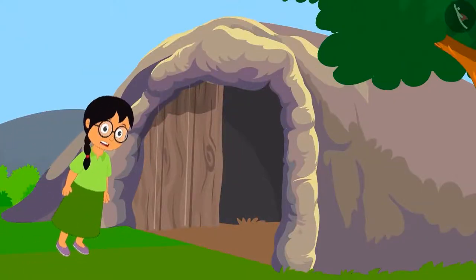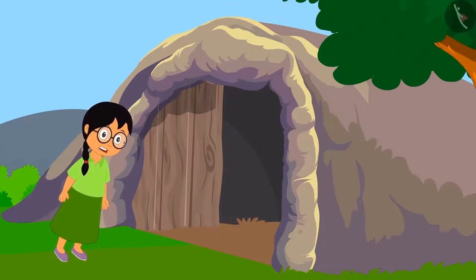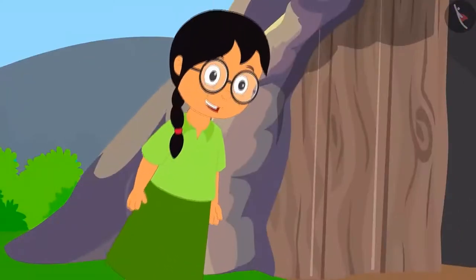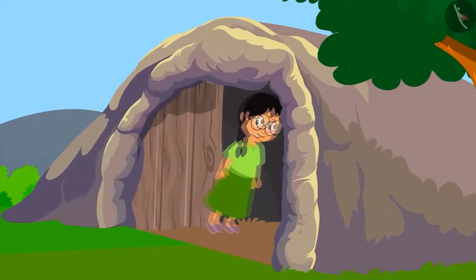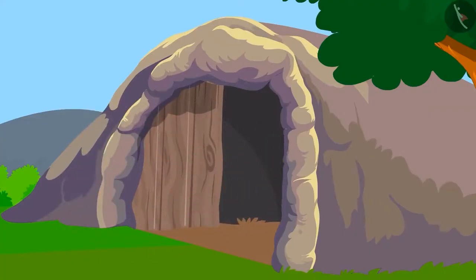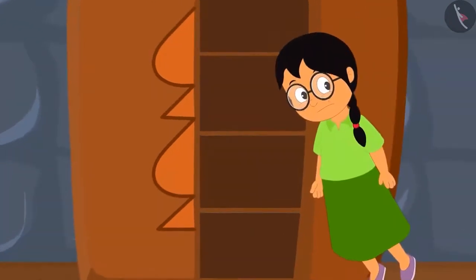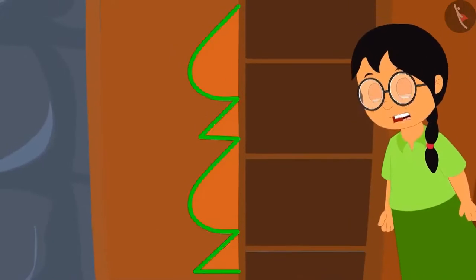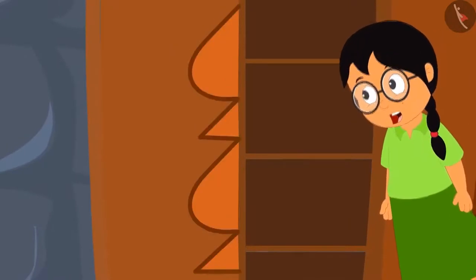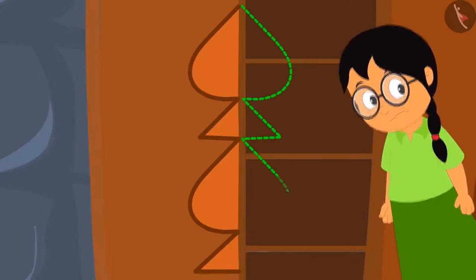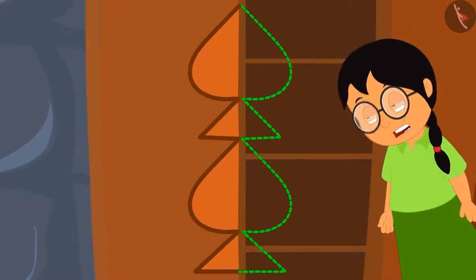Minoo was always afraid to go to Shere Khan's house. But now she thinks that Shere Khan will not be able to see her. And so, she decides to go to Shere Khan's house. She goes to Shere Khan's house and sees this pattern on the door of his closet. She thinks how she can complete the second part of this pattern using the dot grid.